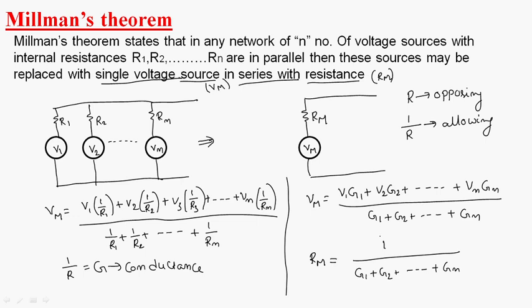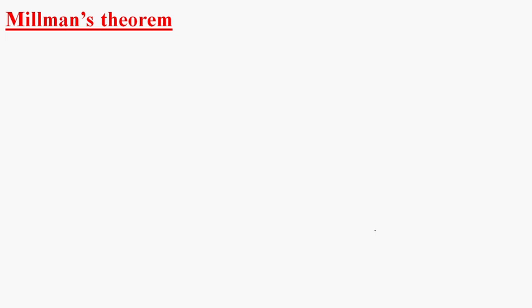If we have current sources in the network, then Millman's theorem is similar. A network having N current sources with internal conductances are replaced by a single current source in parallel with conductance.